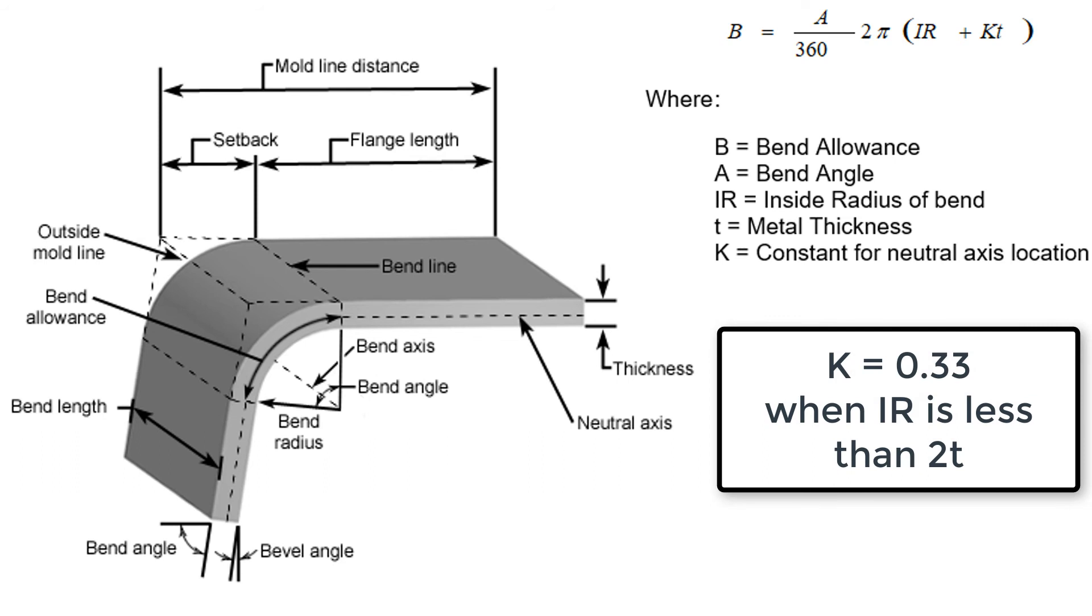When the internal radius of the bend is less than two times the thickness of the material, a K value of 0.33 is used.